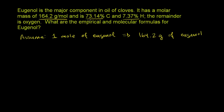They gave us the composition — they tell us what percentage is carbon, what's hydrogen, and the remainder is oxygen. If we assume we have a mole of eugenol with a mass of 164.2 grams, we can use the percentages to figure out the mass of each element. So: 164.2 grams times 73.14% (or 0.7314) gives us 120.1 grams of carbon.